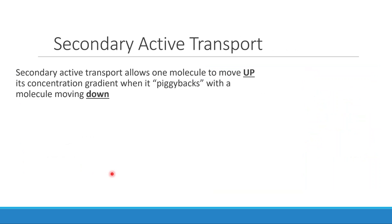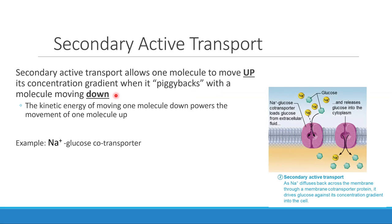So let's talk about secondary active transport. Secondary active transport is what I like to call piggybacking — one thing moves up its concentration gradient while another thing moves down. Because that thing moving downhill so badly wants to go downhill, it's willing to let somebody else go uphill as it moves. Let's look at a specific example of secondary active transport.